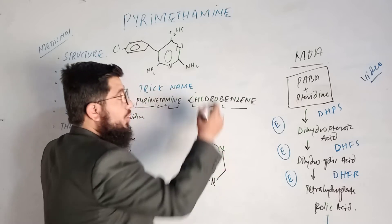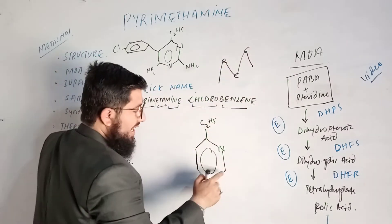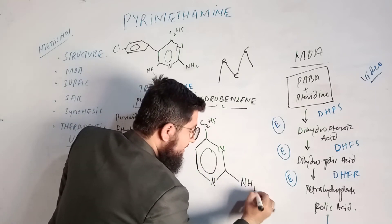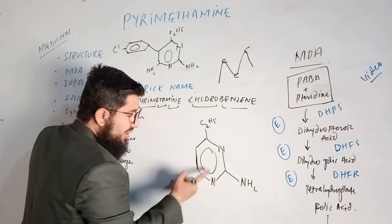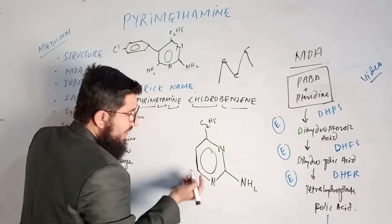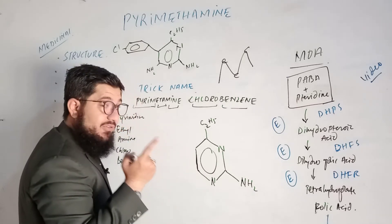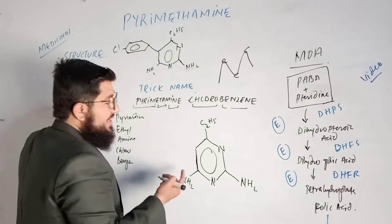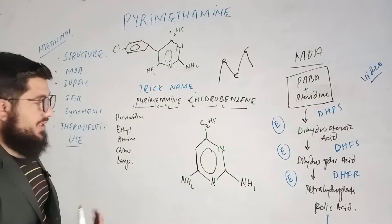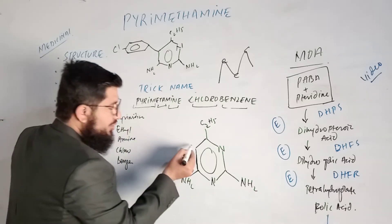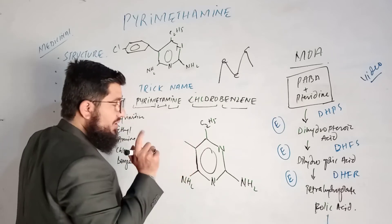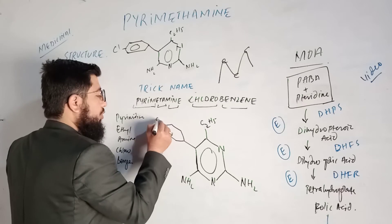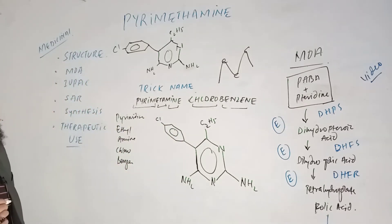For nitrogen, three valencies are satisfied. Moving to the next carbon on the ring — carbon has four bonds, with one, two, three satisfied, and the fourth gets an NH2 group. Then moving to the next nitrogen — three valencies satisfied. The next carbon also gets its fourth bond occupied by an amine group. Then the remaining components, chloro and benzene, are attached — chlorobenzene occupies the final bond of that carbon.